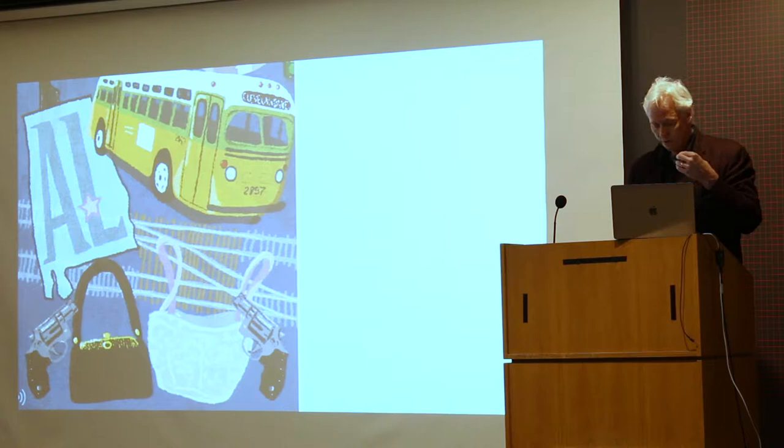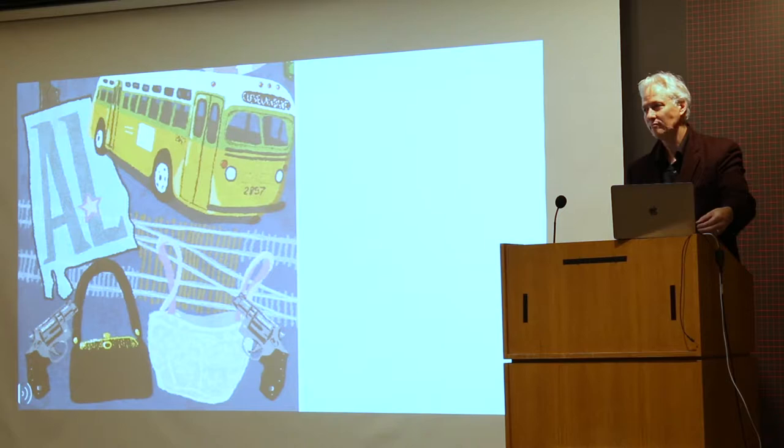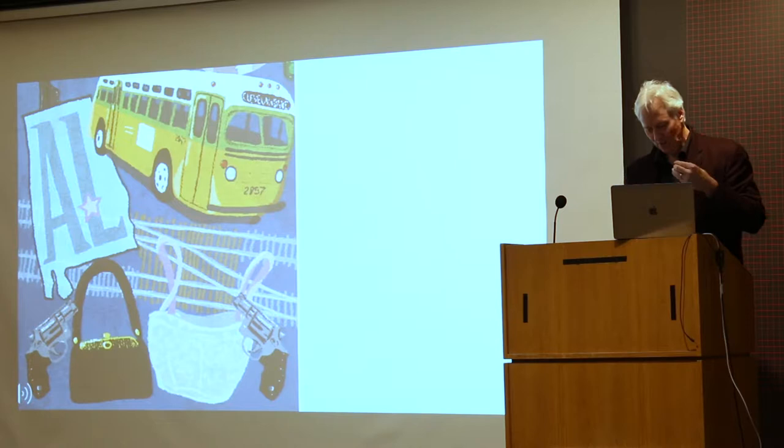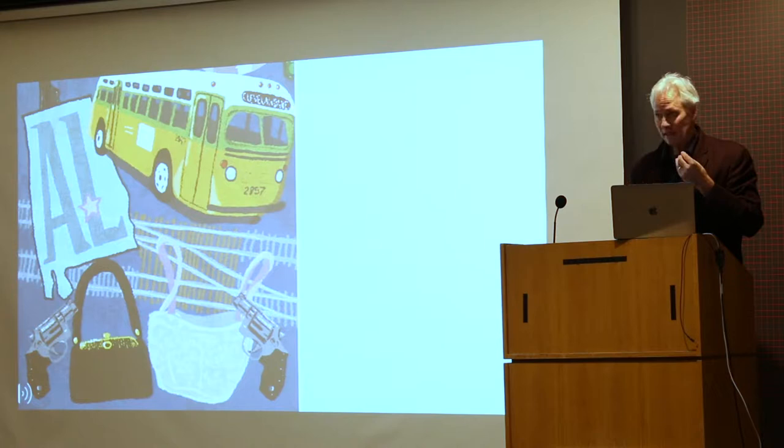Sojourner Truth apparently did say something like, 'Then that little man in black there, he says women can't have as much rights as men because Christ wasn't a woman. Where did your Christ come from? From God and a woman. Man had nothing to do with him.' What is clear from the speech is that Sojourner Truth was an abolitionist and a feminist.